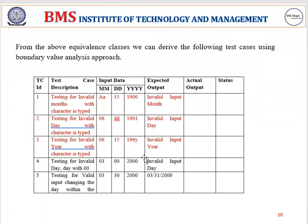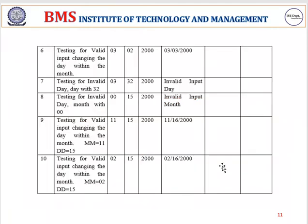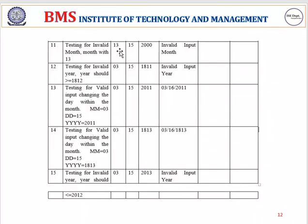To summarize the valid and invalid inputs: for date, 0 is invalid and 30 is valid; 2 is valid and 32 is invalid. For month, 0 is invalid, 2 and 11 are valid, and 13 is invalid. For year, 1811 is invalid, 1813 and 2011 are valid, and 2013 is invalid.